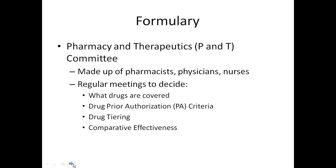Another area managed care pharmacists get involved with is the formulary — the list of drugs covered by the plan. The formulary is decided by the P&T Committee, the Pharmacy and Therapeutics Committee, made up of pharmacists, physicians, and nurses. Most P&T committees meet quarterly and decide which drugs are covered, the PA criteria, and how drugs are tiered. A low tier typically means cheap generics, while higher tiers include expensive specialty medications where PA criteria come into play.